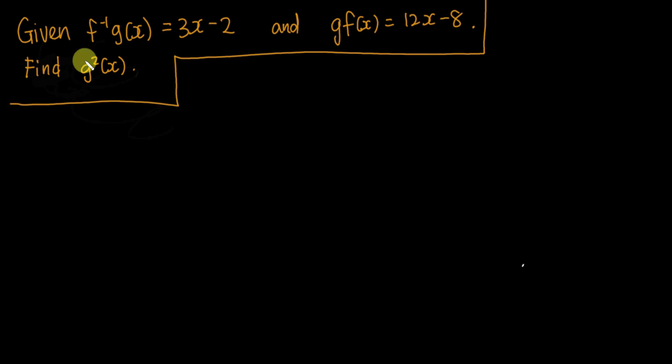In order to get the g squared x, since I have both of these, I will try to figure out what happens if I combine these two functions. So if I can substitute this one, which is the f inverse g into the g∘f(x), you can see what I will get.